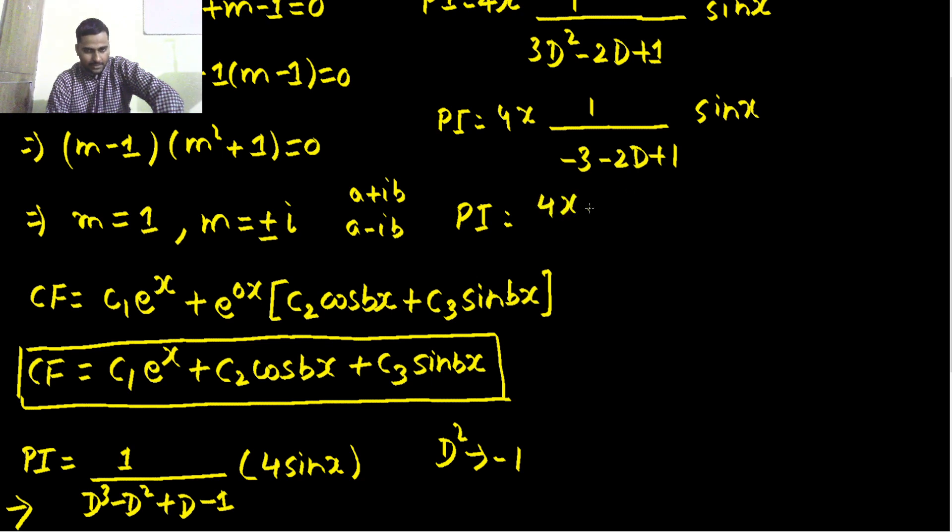So I can take, this 4x is already there, I take 2 common from denominator. It was -2D - 2 so if I take -2 common then I get D + 1. Because I have D + 1 and for sin x I need D² in each step to proceed, so I am multiplying by D - 1 in numerator and denominator and this sin x remains as it is.